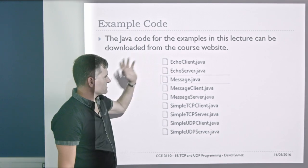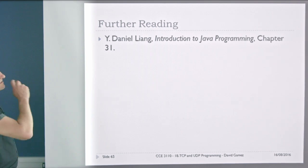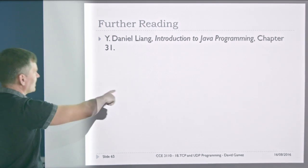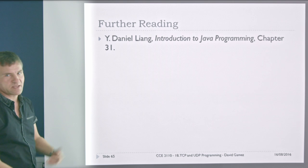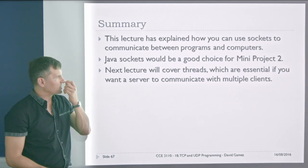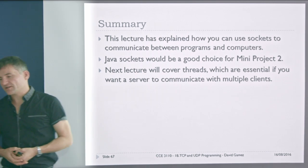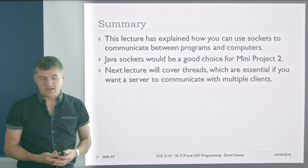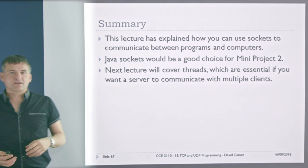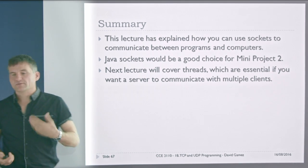All the example code I've shown you is on the class website. You don't need any jar files — it's standard Java. For more introduction to this kind of stuff, the Liang book chapter 31 has a lot on TCP/UDP programming. In this lecture I've talked about how you can use sockets to communicate between programs running on the same or different computers. I personally think this is the best choice for Mini Project 2, and we'll have some lab sessions on UDP and TCP programming. The next lecture will cover threads — if you want to use a server to communicate with multiple clients, it'll be much easier using threads because of these blocking calls.